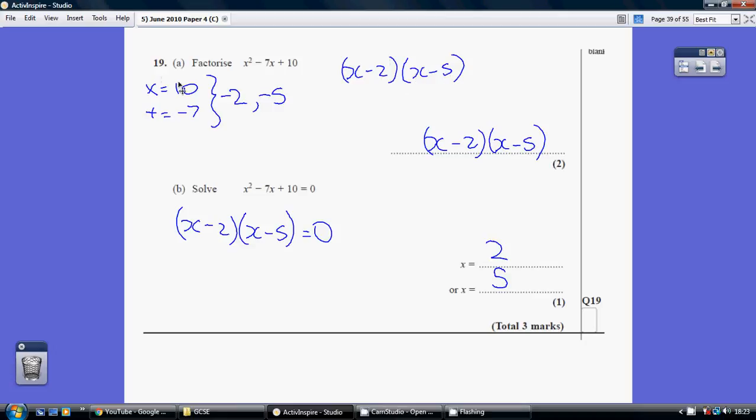Well our two magic numbers multiply to make the number on the end, which is plus 10, but add to make the number in front of the x, which is minus 7.